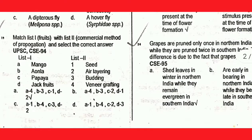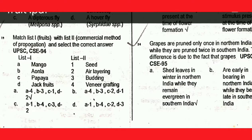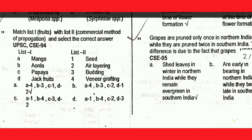Next question: grapes are pruned only once in North India, while they are pruned twice in South India. This difference is due to the fact that grapes shed their leaves in winter in North India, while they remain evergreen in South India.